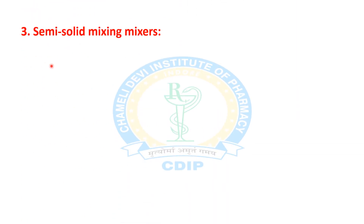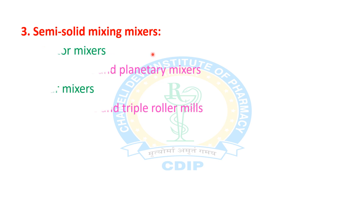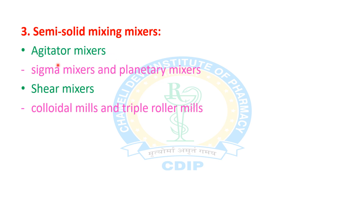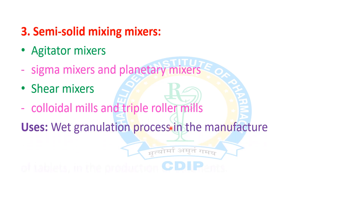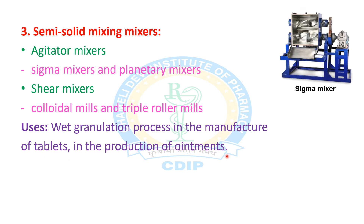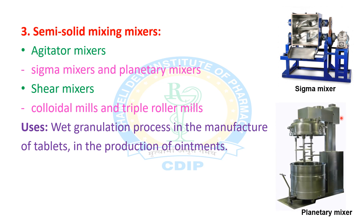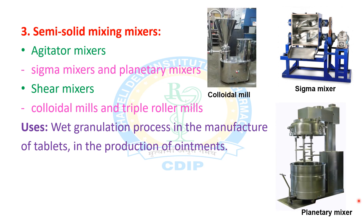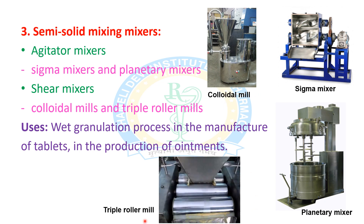The third type of mixers are semi-solid mixing mixers. First are agitator mixers — examples include sigma mixers and planetary mixers. Second are shear mixers — examples include colloidal mills and triple roller mills. The uses of semi-solid mixing mixers are in the wet granulation process, in the manufacture of tablets, and in the production of ointments. Figures shown include sigma mixers, planetary mixers, colloidal mills, and triple roller mills.